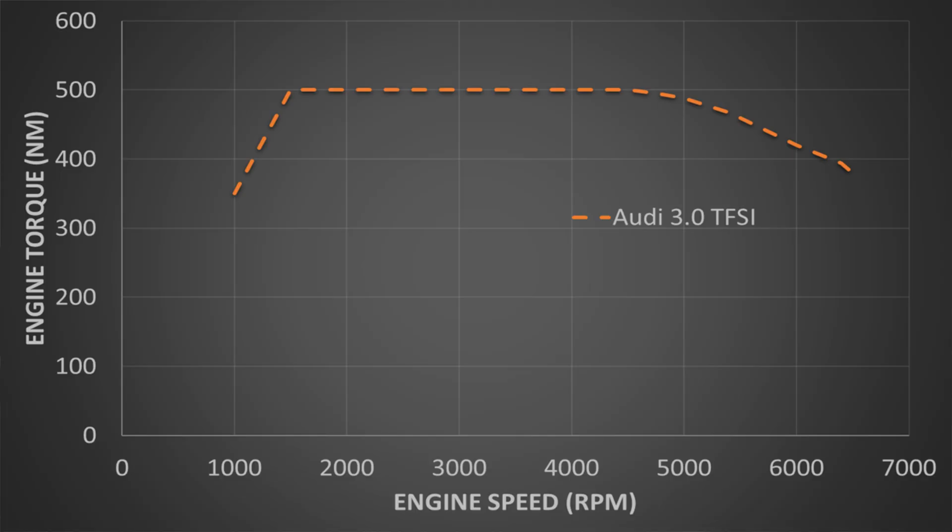This Audi engine has a nice wide torque curve starting from a relatively low RPM and a 6,500 RPM redline. This represents a good example of a modern turbo engine, but in the end, you will see it doesn't matter what engine I'm using.